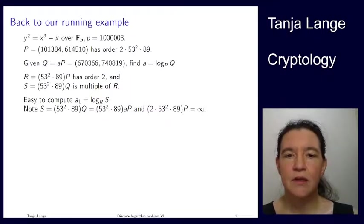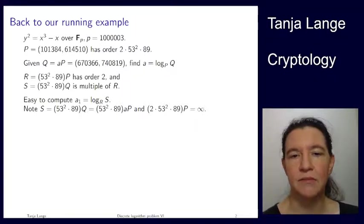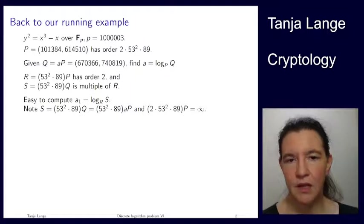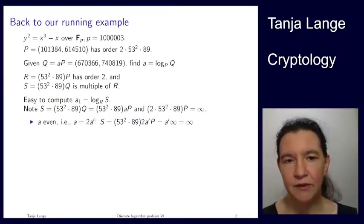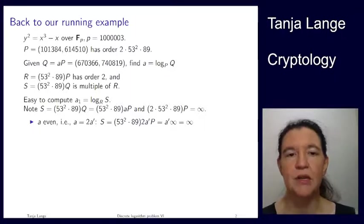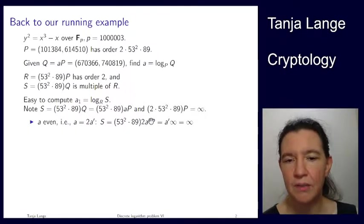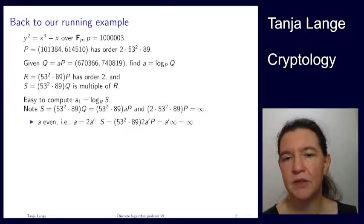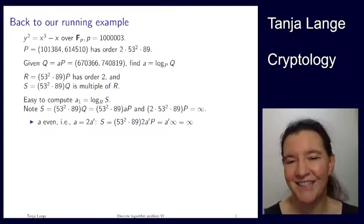So, you do the scalar multiplication, and then you test which one it is. Now, these are the two options, namely exactly that one, and we would get infinity there. So, if now a happens to be even, and a is our discrete log, so we can write a as 2a′, then what we have in here, well, we're replacing the a by 2a′, then we can put the two into here, and we get exactly this expression that's up here. So, then we have a′ times infinity, and that's infinity again.